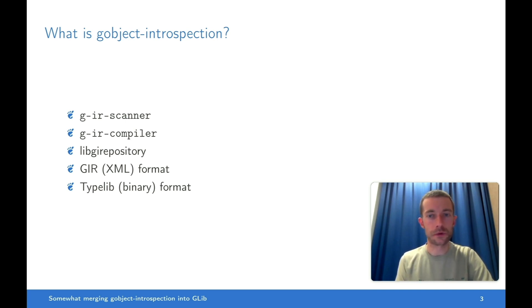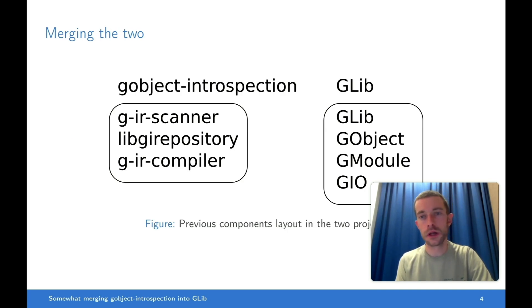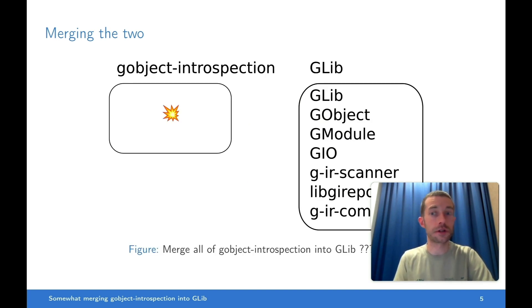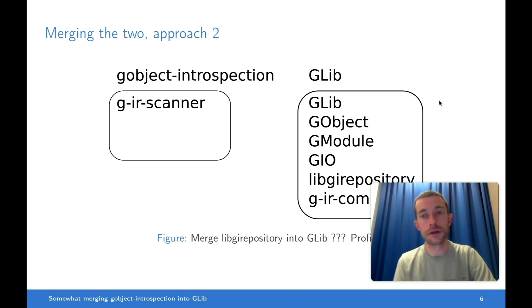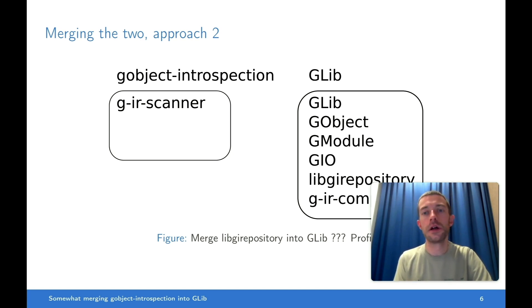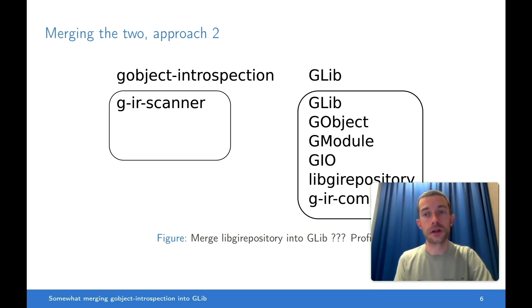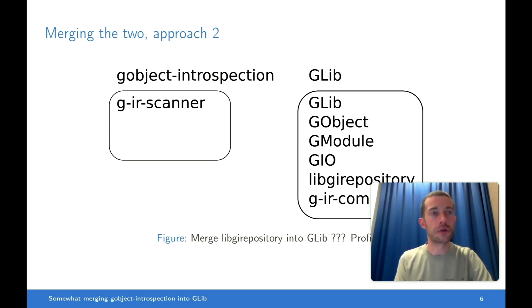When merging the two, you'd think we just move all of the components out of GObject Introspection and into GLib and we're done, right? No. GIR Scanner — the utility that scans your source code and generates the GIR XML file — needs to parse C source code, so it's written in a mixture of CPython, Python, Flex, and Bison. As a result it needs quite a lot of dependencies to be compiled, and in particular it needs the Python development headers. Moving that into GLib would add those dependencies to GLib, and that would be quite a big and unacceptable change.